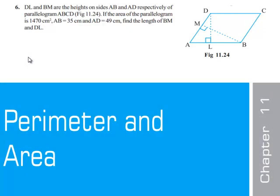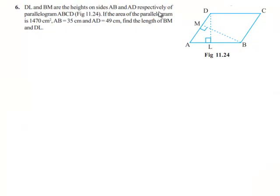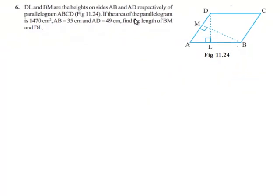Moving on to question number 6: given that DL and BM are the heights on the sides AB and AD respectively on the parallelogram ABCD. As shown in the figure, DL is the corresponding height of base AB, and BM is the corresponding height of side AD. The area of the parallelogram is given as 1470 cm², with AB as 35 cm and AD as 49 cm. We are asked to find the lengths of BM and DL.